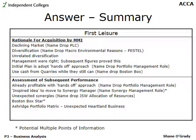The last point for First Leisure is the Ashridge portfolio matrix — probably the most difficult to spot. Initially, the acquisition wasn't driven by seeing massive parenting opportunities: First Leisure wasn't a basket case, it was profitable, and there wasn't obviously anything MMI could offer. They were going for an unrelated company precisely to diversify. But then things changed — First Leisure had a parenting opportunity needing land, and MMI could provide it through their exhausted quarries. First Leisure then became a 'heartland business' on the Ashridge portfolio matrix.